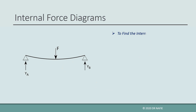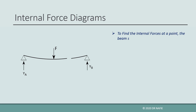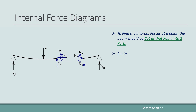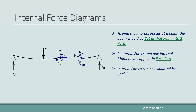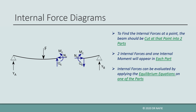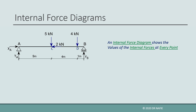To evaluate the internal forces at a point, we have to cut the beam at that point into two parts so that the internal forces at that point appear. Then we can apply the equilibrium equations on one of the two parts to evaluate these internal forces. Now that we have defined what internal forces are and what their types are, we can explain what is meant by an internal force diagram.